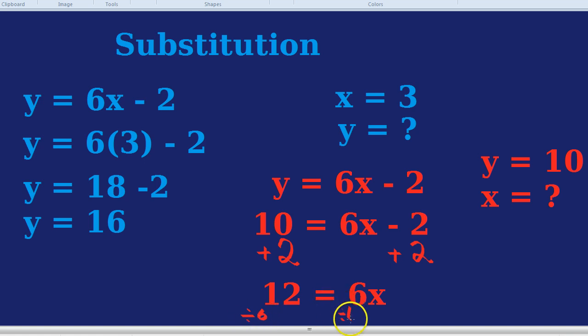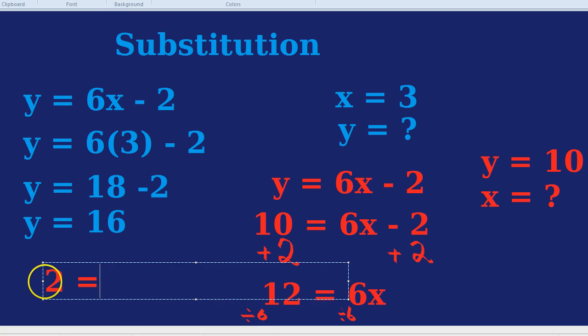You probably could just guess the number at this stage, because 6 times by what gets you to 12. But technically, if we're going to do the opposite, we would just divide by 6. 12 divided by 6 is 2. So x equals 2.